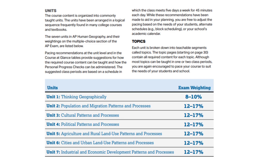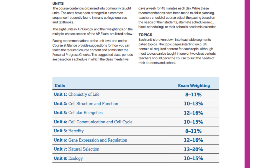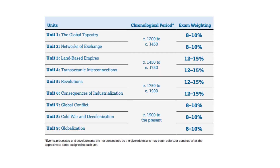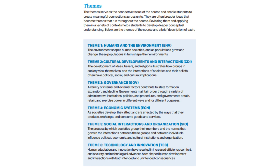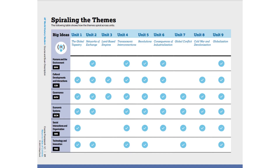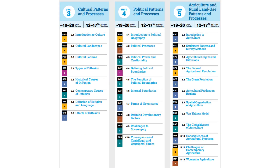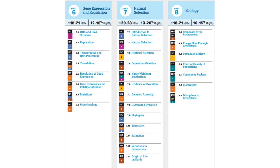Some units are weighted more than others on the multiple choice and on the free response, and these weights will show up multiple times across this document. Here on AP Biology, it gives descriptions of each of the four big ideas. Here on AP World, it organizes the units and chronological periods and provides the main themes for the course. The next section is the course at a glance, which provides a breakdown of the units into topics and shows how much weight each unit carries on the exam and how long you should be spending on them in class.